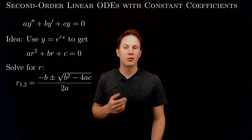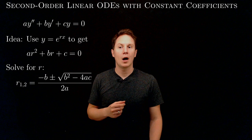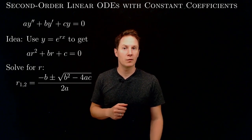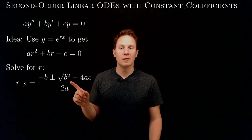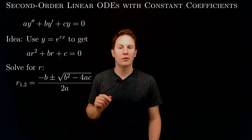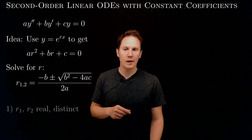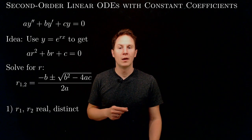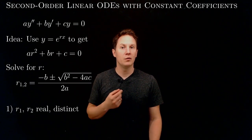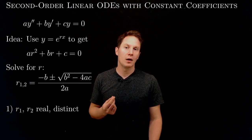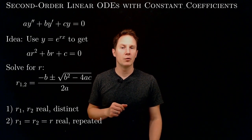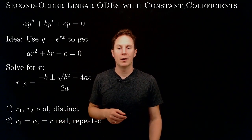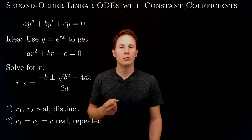We get the solutions r1 and r2 by applying the quadratic formula, and we have three cases to distinguish. If the discriminant b squared minus 4ac is positive, then we have two real distinct solutions r1 and r2. If b squared minus 4ac is zero, then we have a single repeated real solution, r1 equals r2, so we denote the common solution by r.